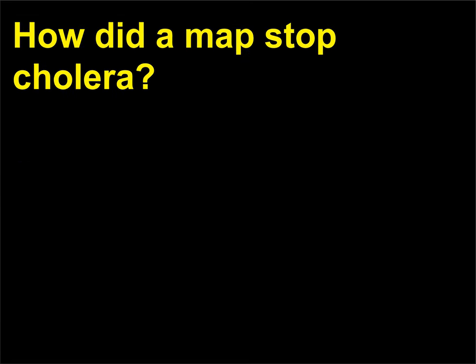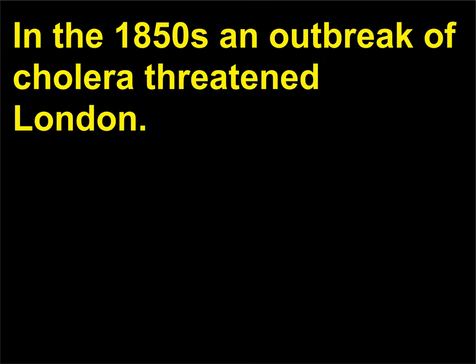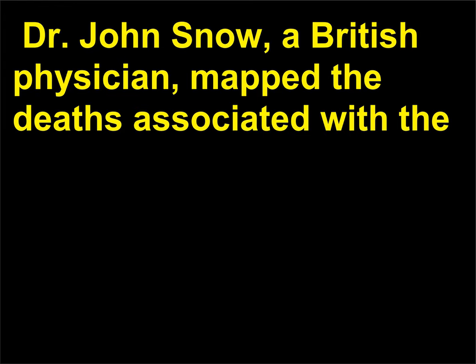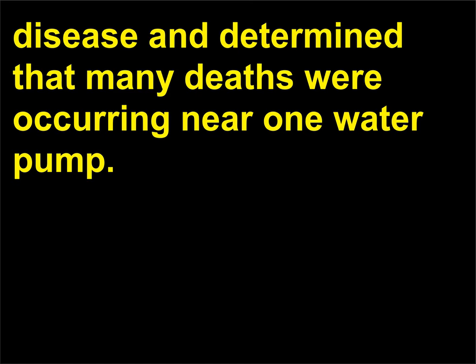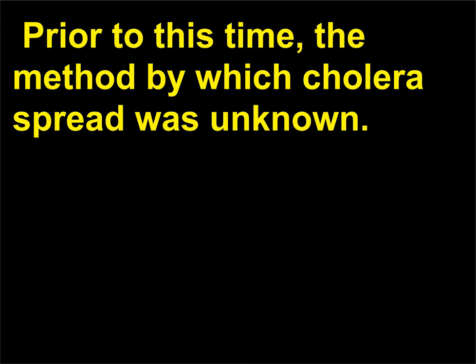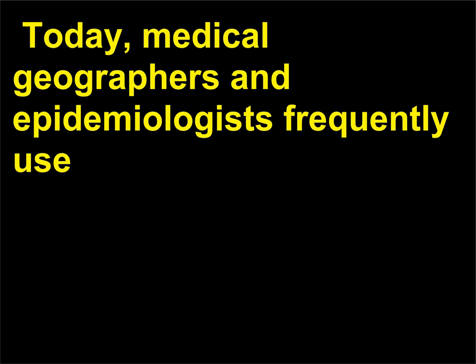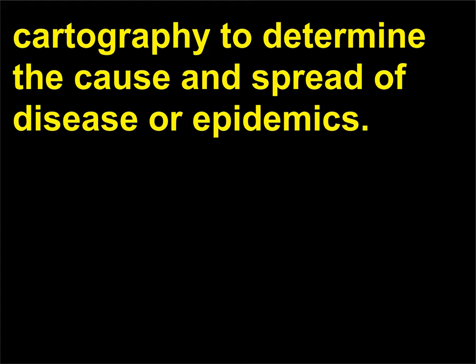How did a map stop cholera? In the 1850s, an outbreak of cholera threatened London. Dr. John Snow, a British physician, mapped the deaths associated with the disease and determined that many deaths were occurring near one water pump. The pump handle was removed and the spread of the disease stopped. Prior to this time, the method by which cholera spread was unknown. Today, medical geographers and epidemiologists frequently use cartography to determine the cause and spread of disease or epidemics.